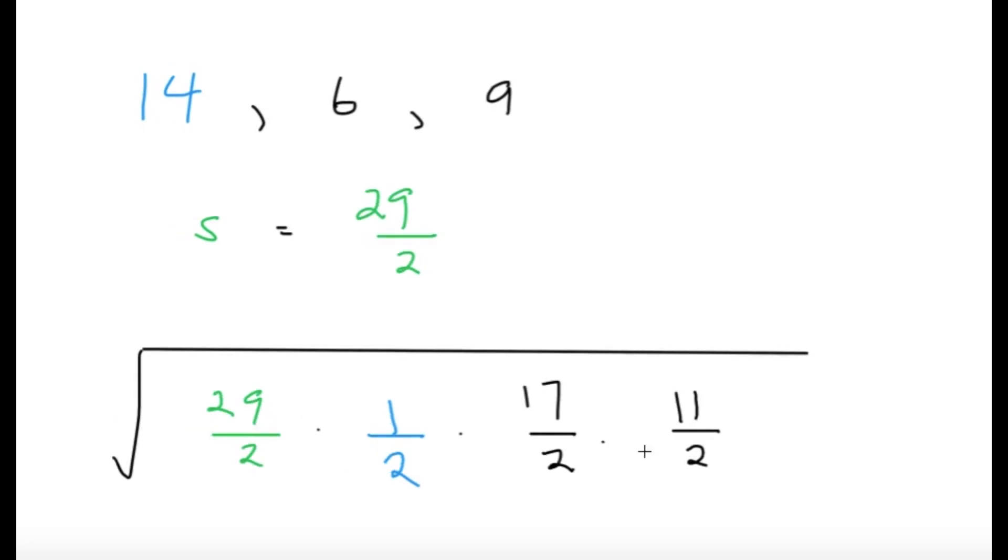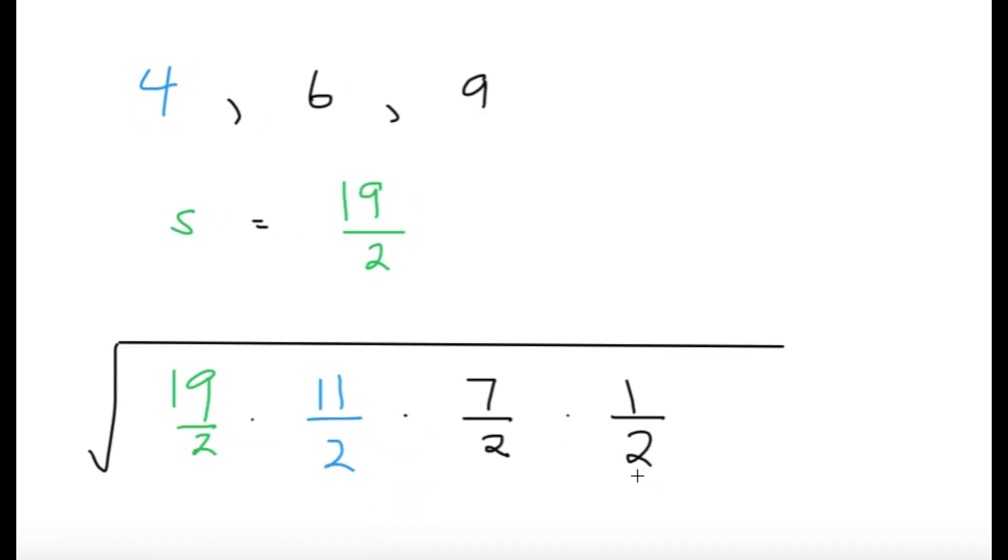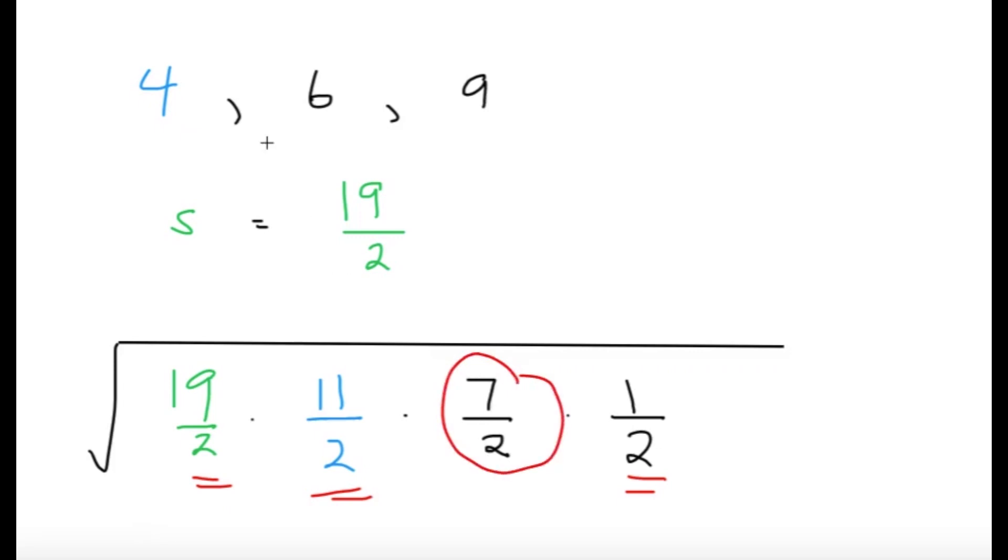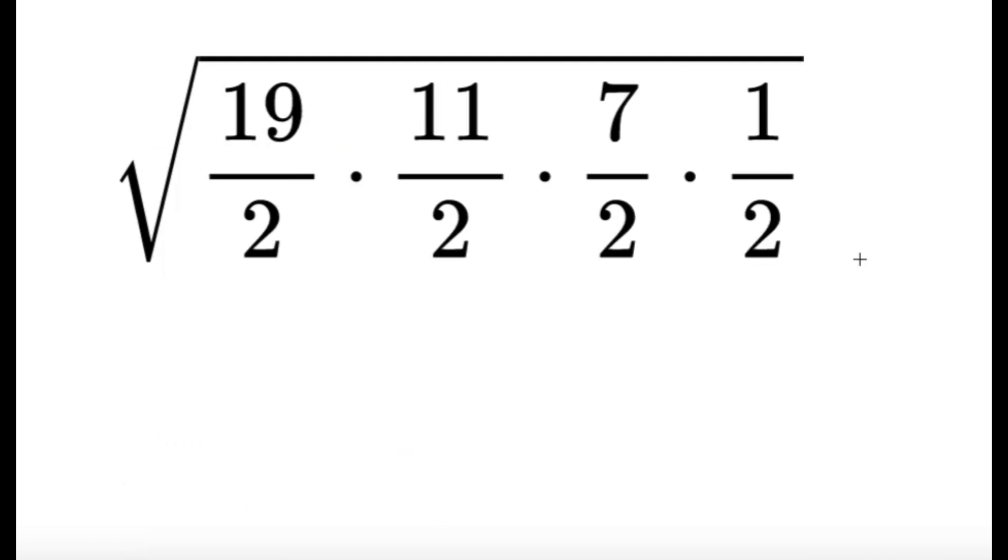Now, just comparing these two, we have a common term of 1 half over here, a common term of 19 over 2, a common term of 11 over 2, but we have 17 over 2 in the case where A equals 14, and 7 over 2 in the case where A equals 4. So, comparing these two, it's already obvious that if A equals 4, the area is smaller, therefore, we should take this value. So, all we have to do is just to simplify this.